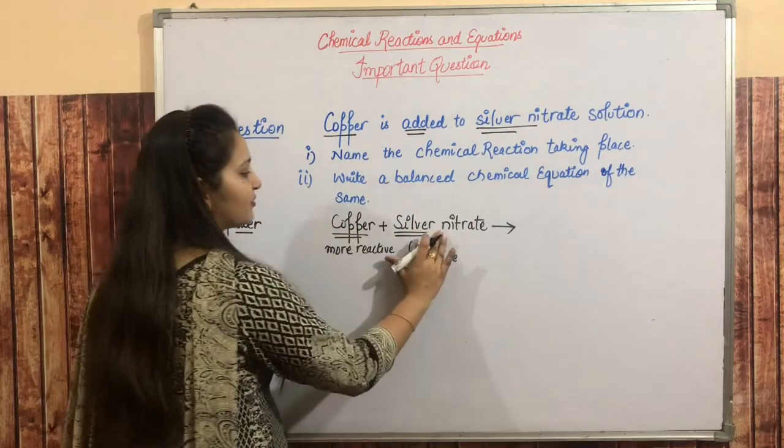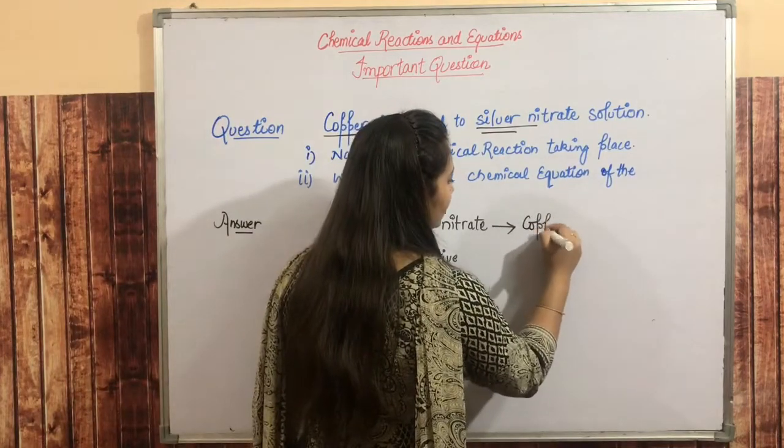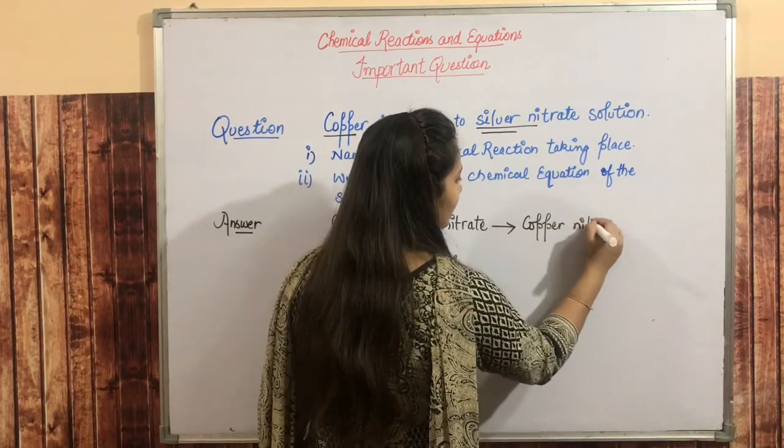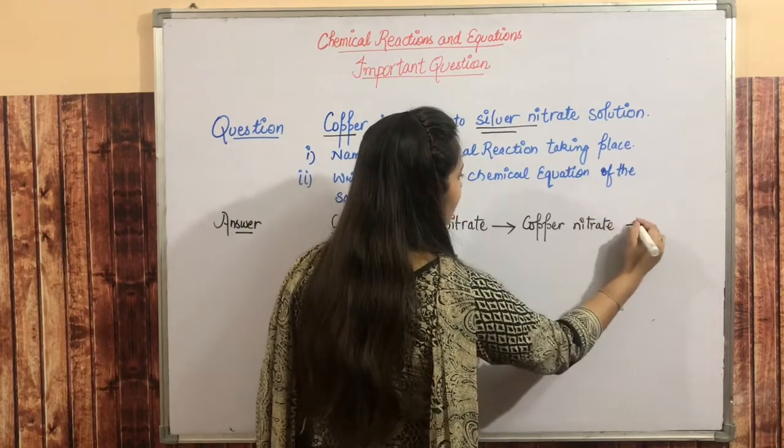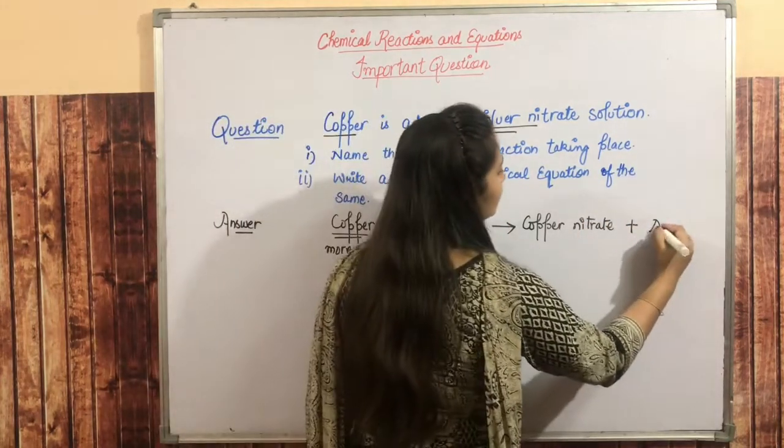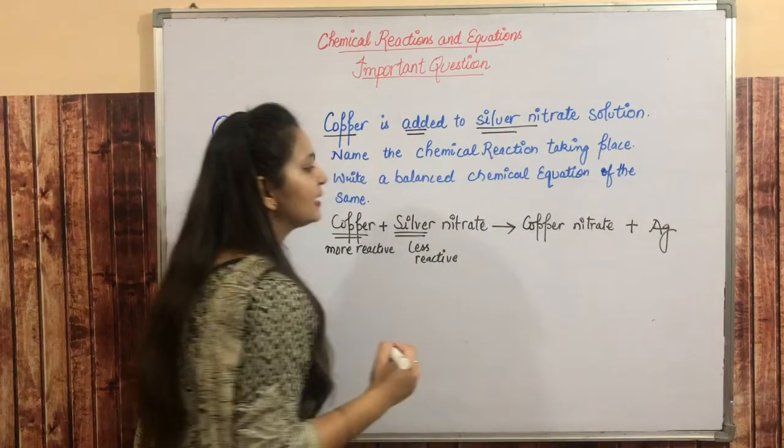So silver nitrate will become copper nitrate, and the silver will be deposited.